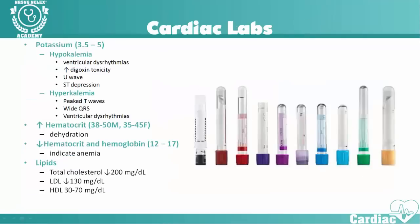Some cardiac labs to be concerned about with cardiac damage. First is potassium — normal potassium is 3.5 to 5. Hypokalemia, so less than 3.5, can lead to ventricular dysrhythmias and increased digoxin toxicity if your patient is receiving digoxin. It can also develop a U-wave. A U-wave is an additional wave that appears after the normal waveform, and this can show up with hypokalemia.